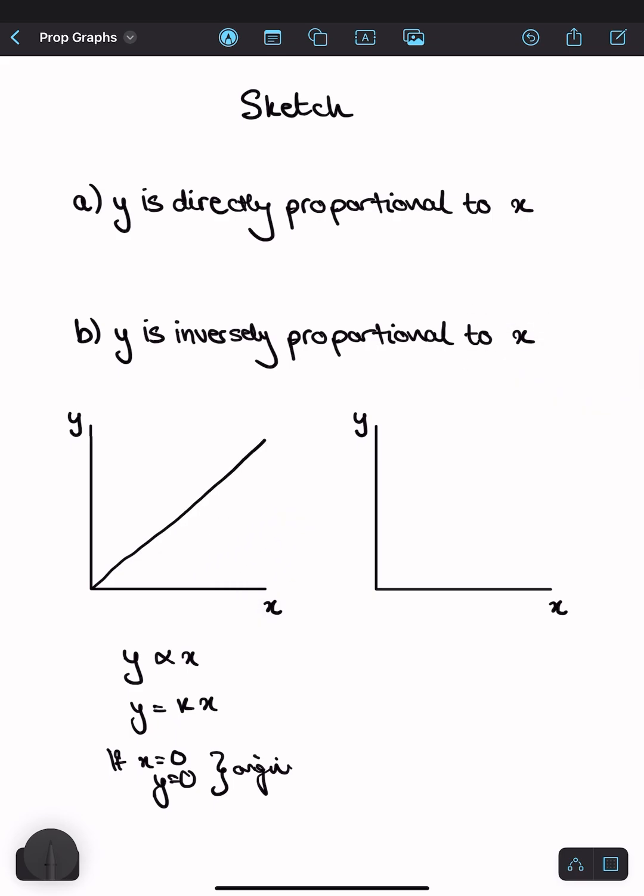This is the one where people tend to make mistakes on. y is inversely proportional to x. So if we write that out, that would look like y is proportional to 1 over x, which means that y is equal to k over x.